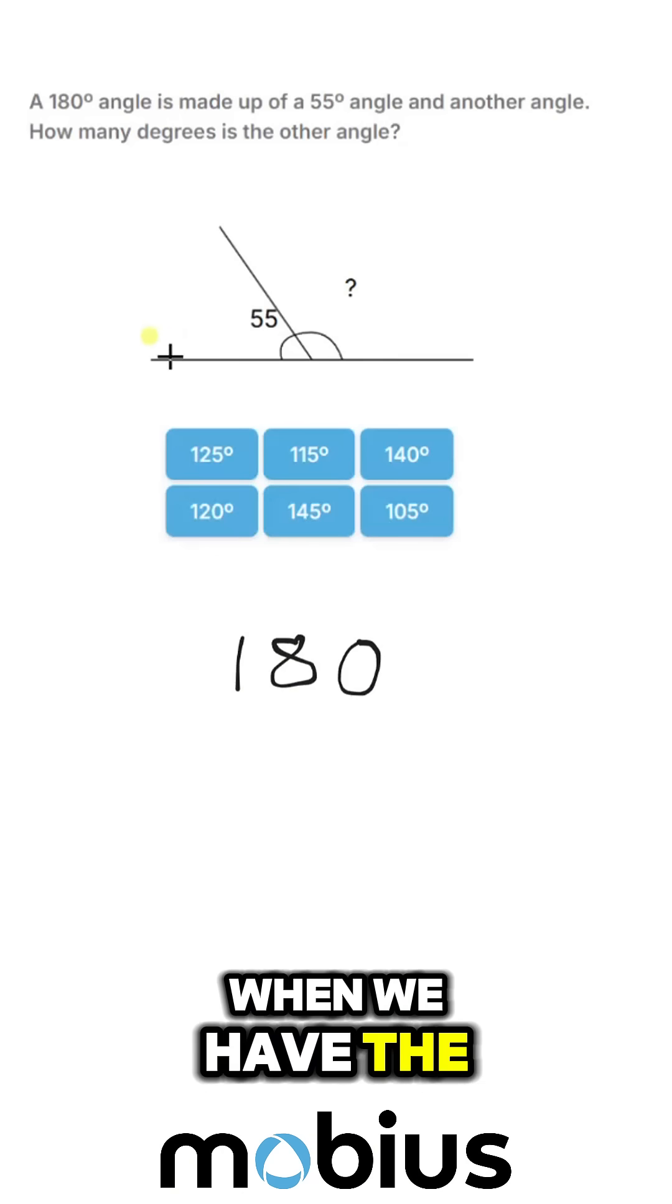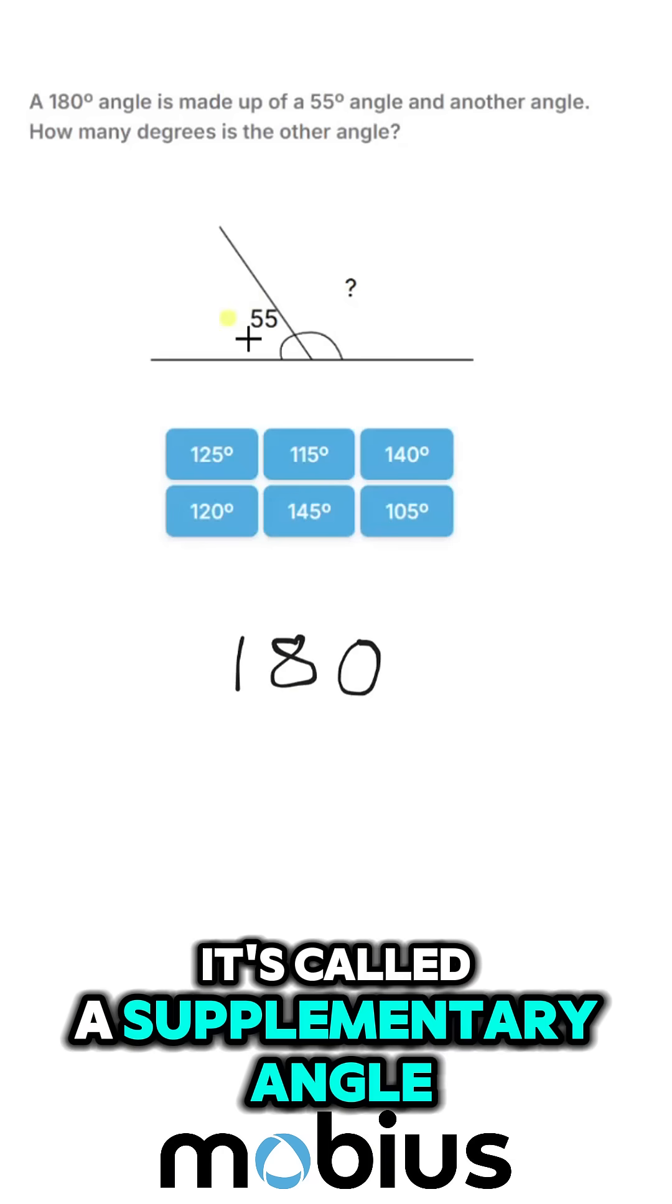When we have the straight line being added like this, it's called a supplementary angle.